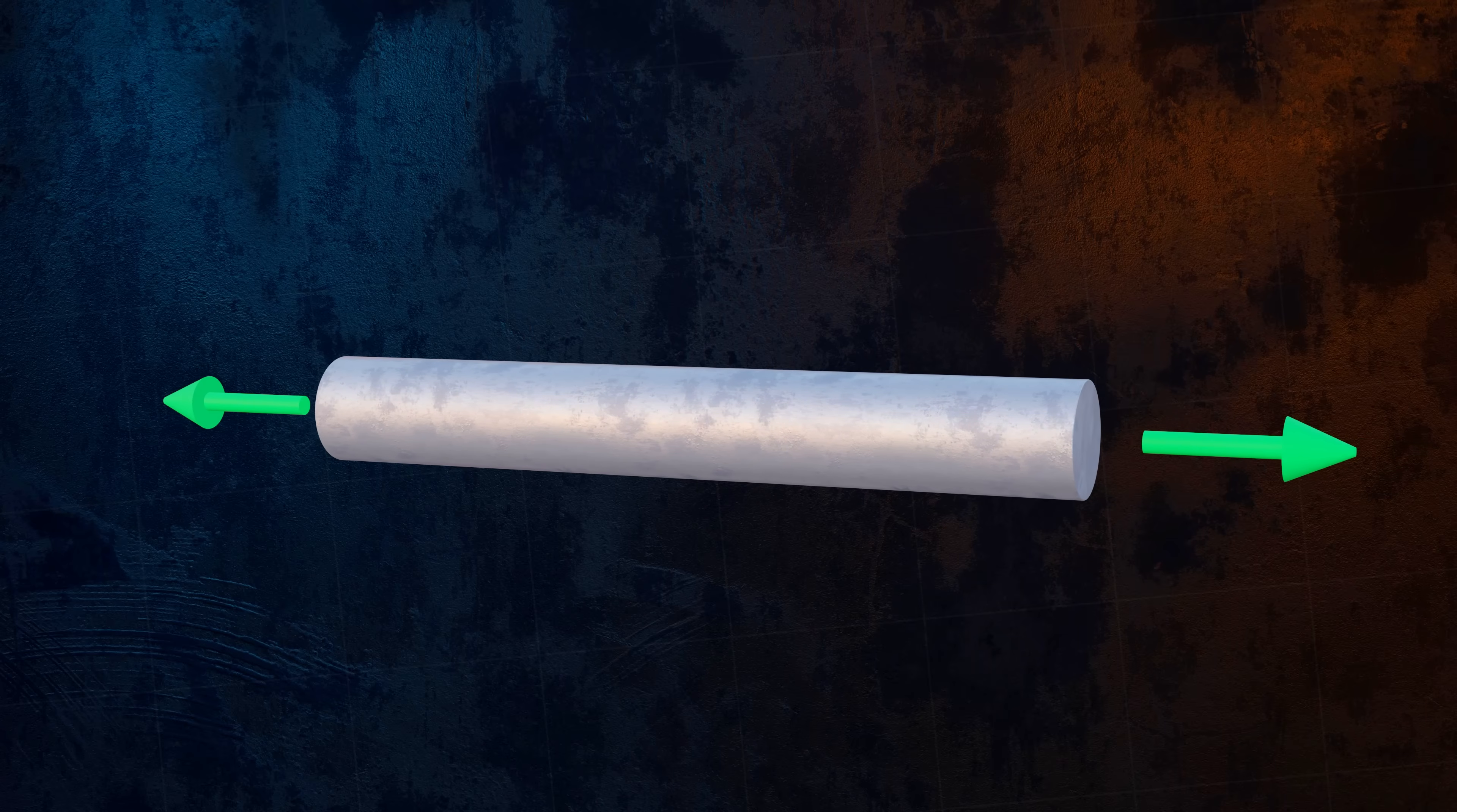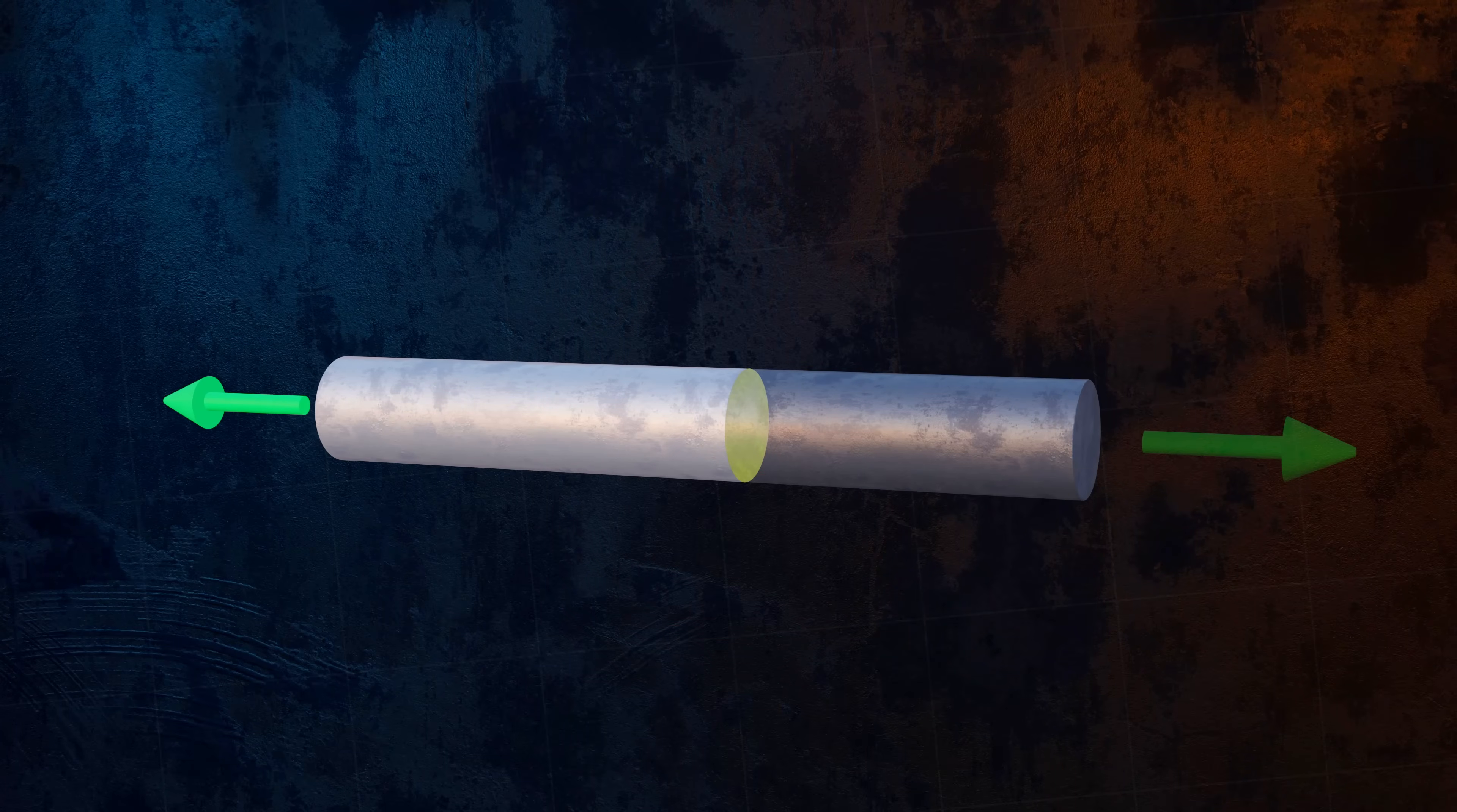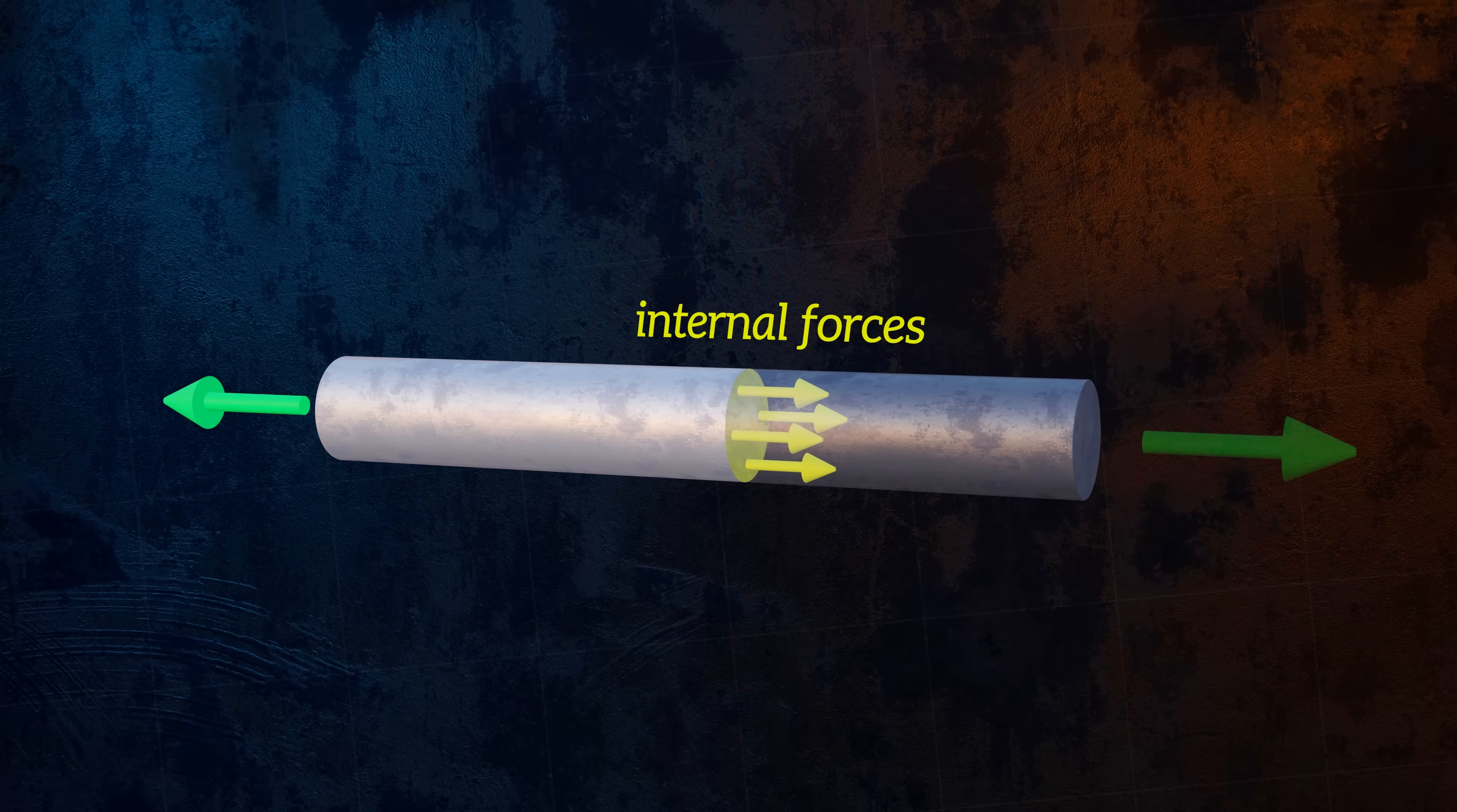Internal forces will develop within the bar to resist these applied forces. We can expose these internal forces by making an imaginary cut through the bar. I chose to remove the right side of the bar, but I could have removed the left side instead.